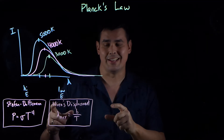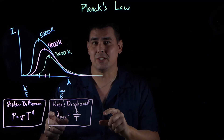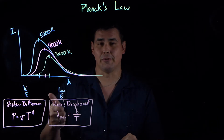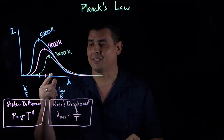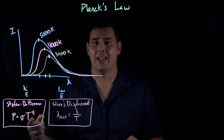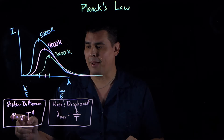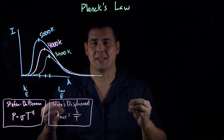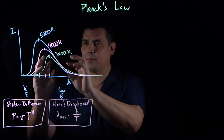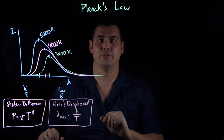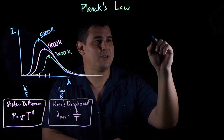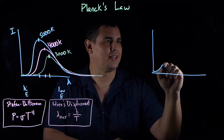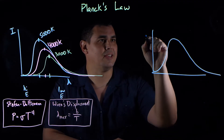These two laws are nice, but neither tells us what Planck wanted to figure out — the full relationship between frequency or wavelength, temperature, and intensity. He needed something that could predict the entire curve. At the time there were two models. The actual curve kind of rises and then tails off at the end — that's intensity versus wavelength.